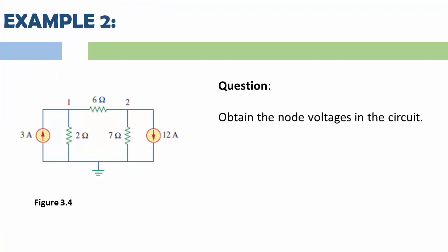Okay, that is for Example 1. Let's see what we have in Example 2. Example 2 says: obtain the node voltages in the circuit. This circuit is also gotten from our text, figure 3.4, and we are finding V1 and V2. Similar to what we did before, I will leave this for you guys to simulate and give me your answer in the comment section below. If you are finding any difficulty, let me know in the comment section.